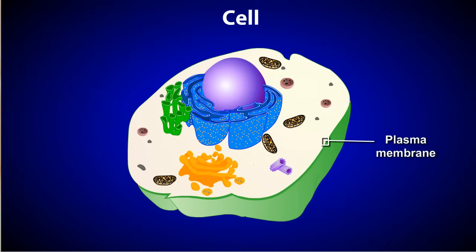All cells have an outer membrane, called a plasma membrane, which acts as a boundary between the outside and inside of a cell.